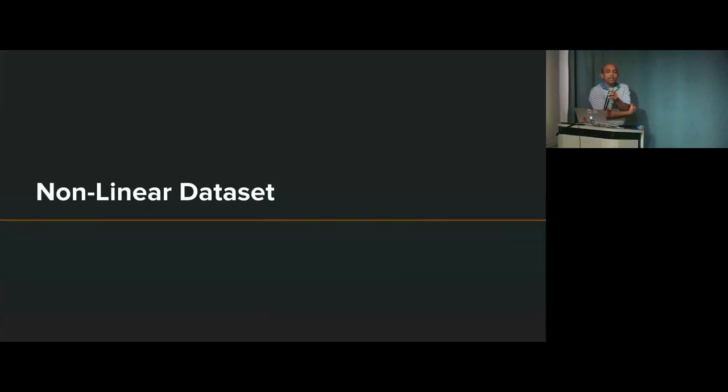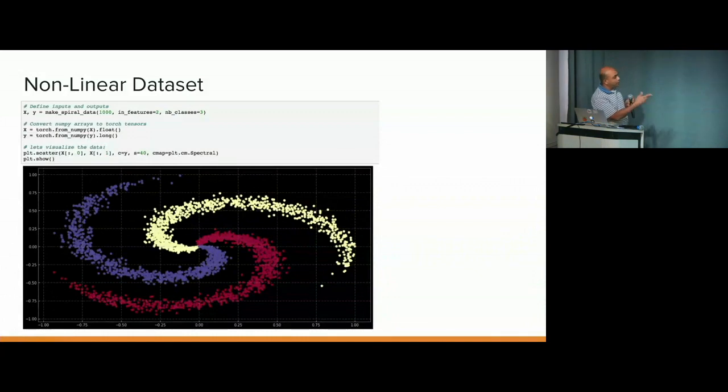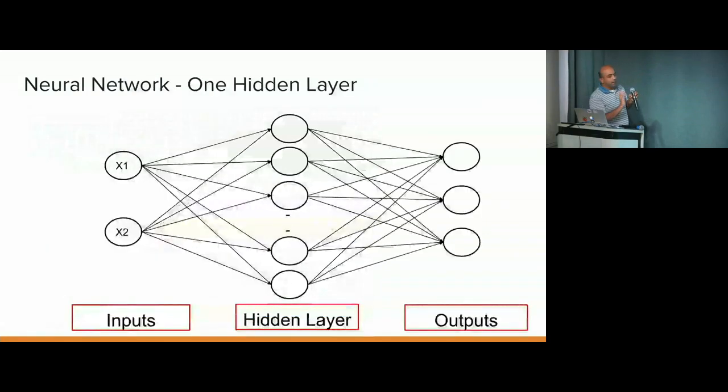All right. So let's take a nonlinear dataset. It's not linearly separable. Specifically, let's look at this dataset, the spiral, three classes. You need to go to a more complex network. Simple models will not be able to separate these layers. And particularly, we're going to go to a one hidden layer neural network. So we're going to have two inputs again, and then we have n number of hidden layers, single hidden layer, but n number of nodes in the hidden layer, and we have the outputs. This is the network we're going to build.